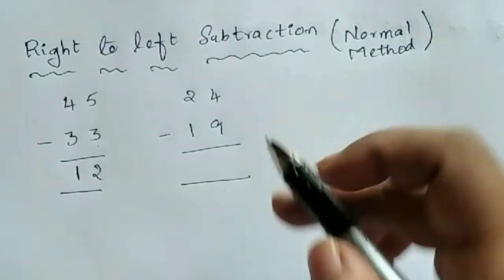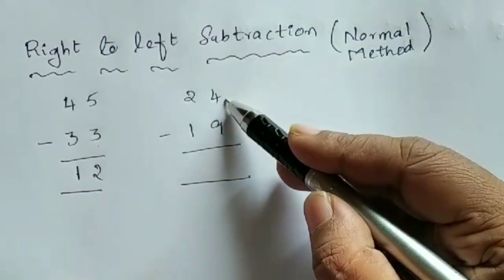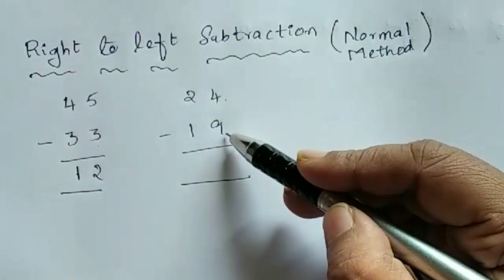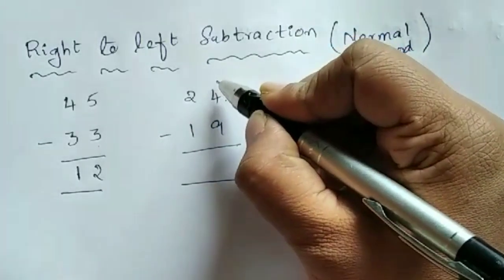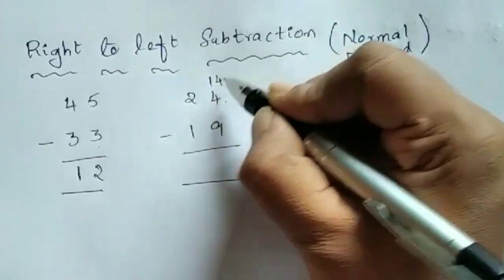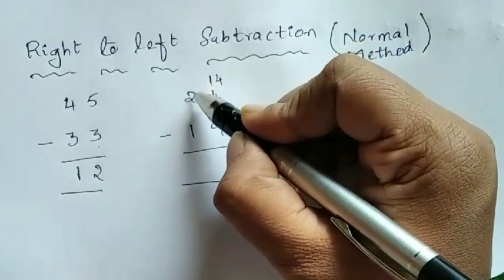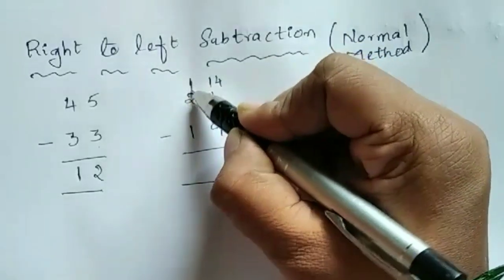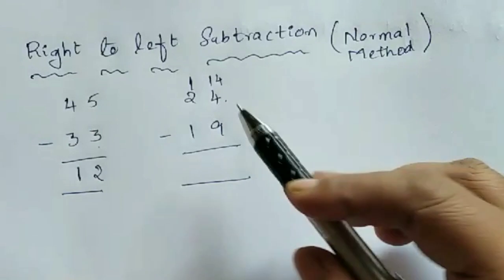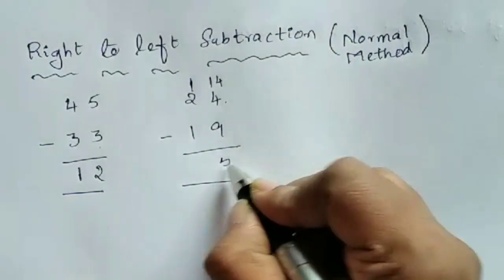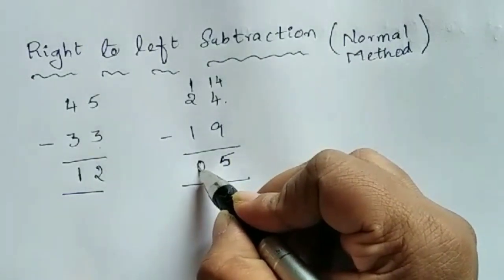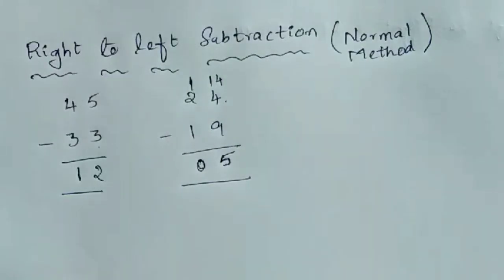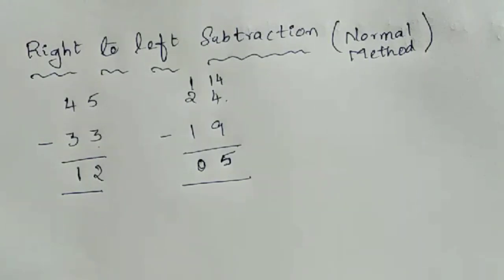The second example: 24 minus 19. If you observe here, 9 is larger than 4 — 9 is larger than the upper digit 4 — so you have to take a bar (borrow). 4 will become 14, and 2 will become 1. Because 9 is larger than 4: 14 minus 9 is 5, and 1 minus 1 is 0. So 5 is the answer. This is normal subtraction that everyone knows, done by taking a bar.